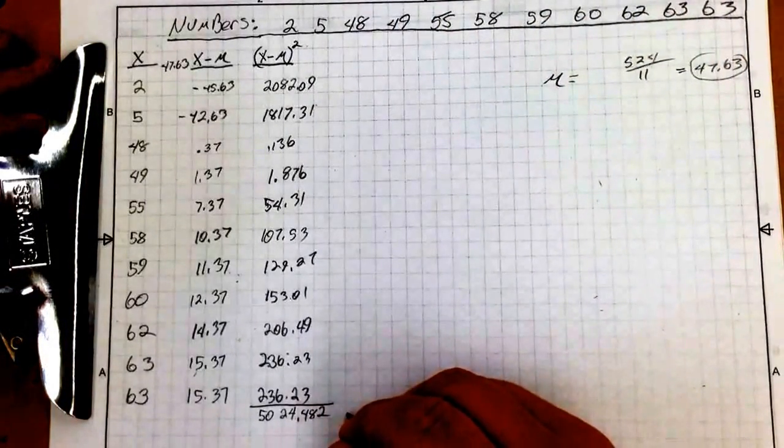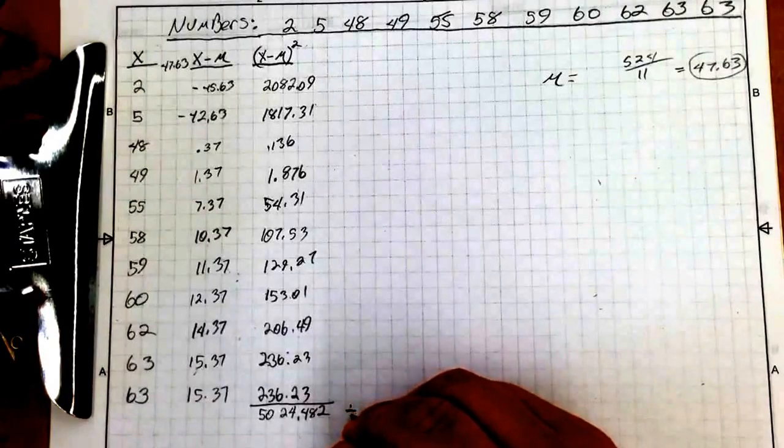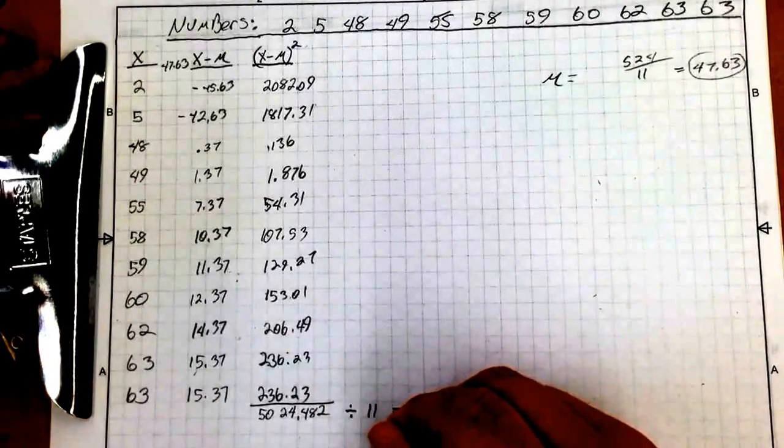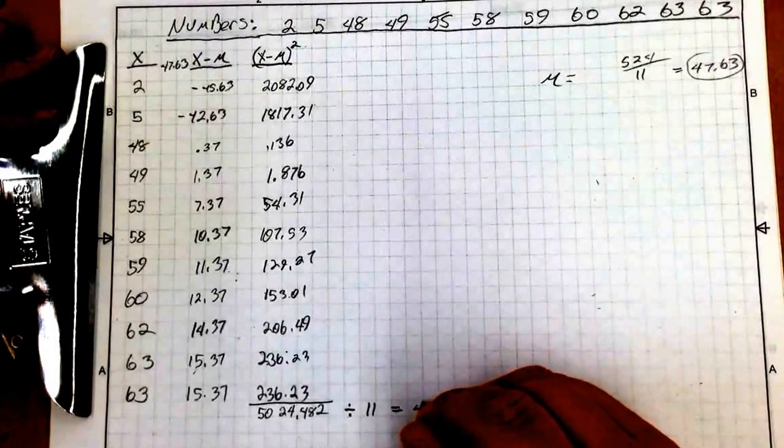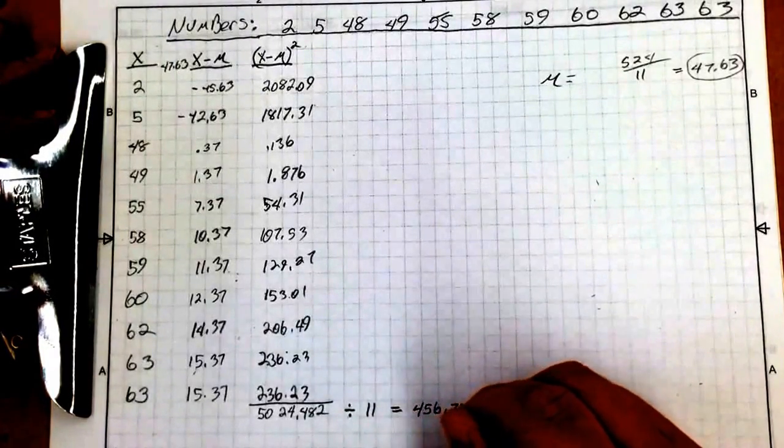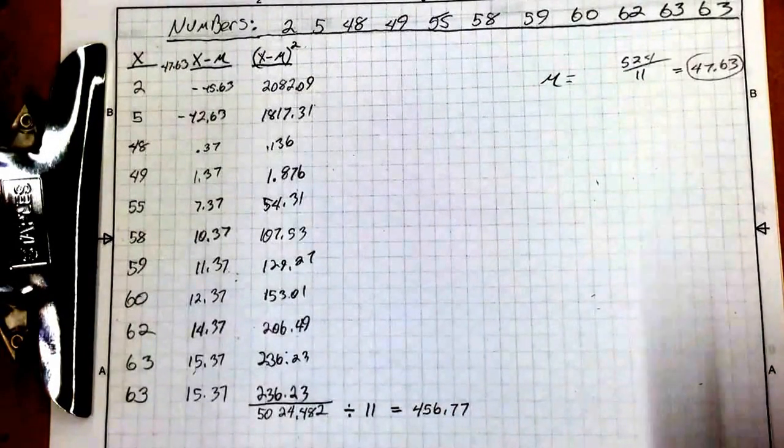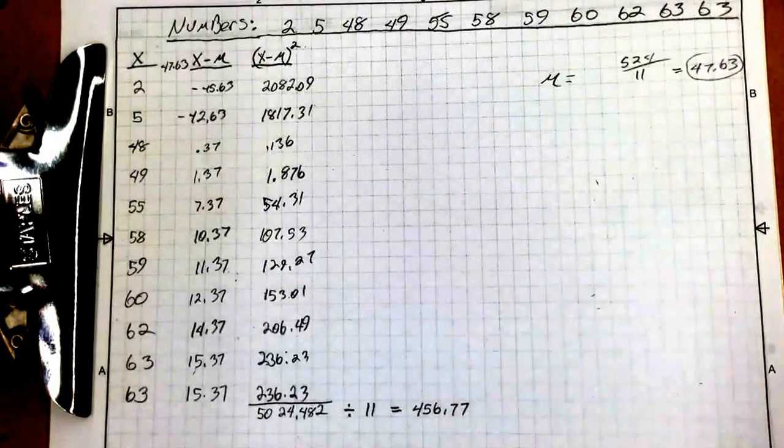So 5024.482 divided by 11 equals 456.77. Now you might be going, yes, I got the answer. No, no you didn't.